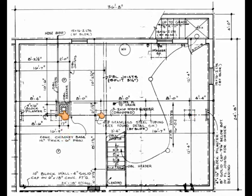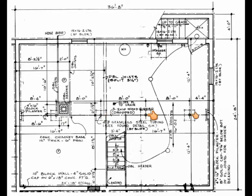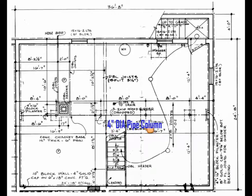In this activity you will install the structural support components for the floor. The structural support components for the floor can be found in the foundation. One of the structural components you will install will be a 4 inch diameter steel column. The steel columns are indicated by the small circular shapes in the foundation plan.